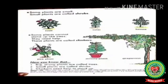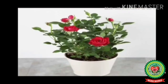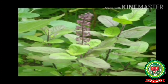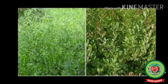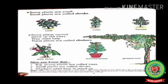Now come to page number four. Let's read: some plants are small. Small plants are called shrubs. Rose, tulsi, heena — this is a rose plant, it is a small plant with a strong stem, so it is a shrub. Heena — another name of heena is mehendi. Girls apply mehendi on their hands. It is also a small plant with a strong stem, so it is a shrub.